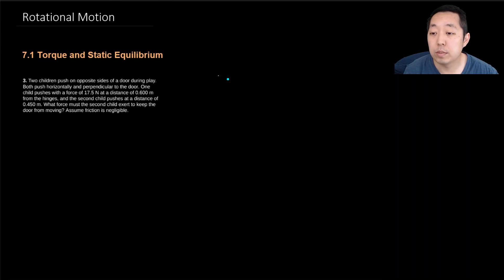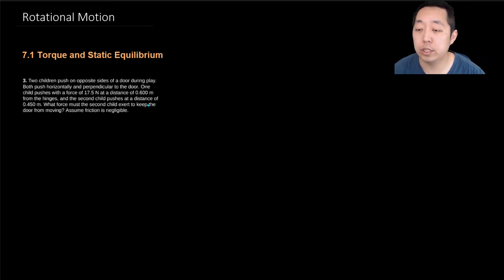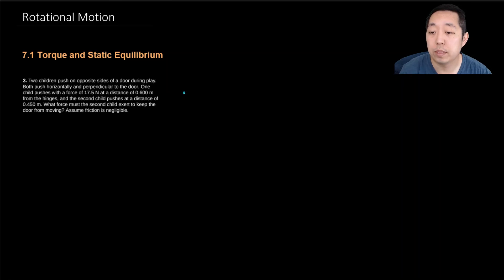Now we're going to be looking at some torque and static equilibrium — we're getting into rotational motion. Let's take a look at this problem: two children push on opposite sides of a door during play.